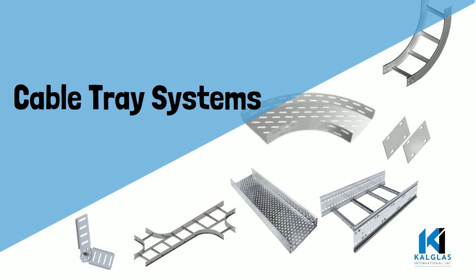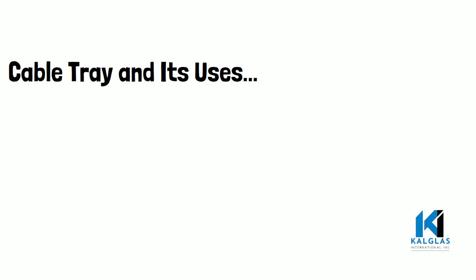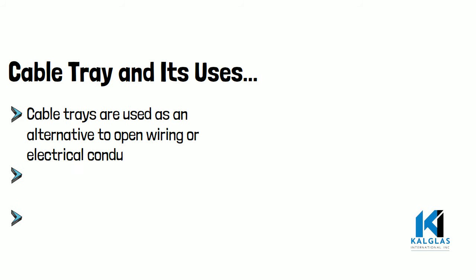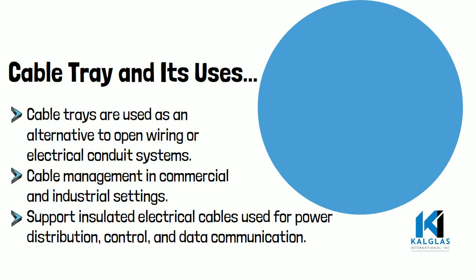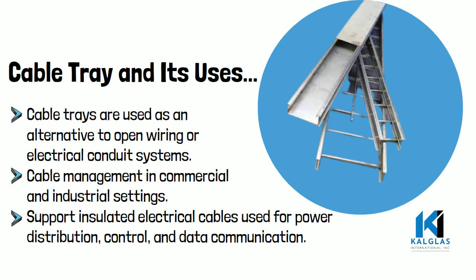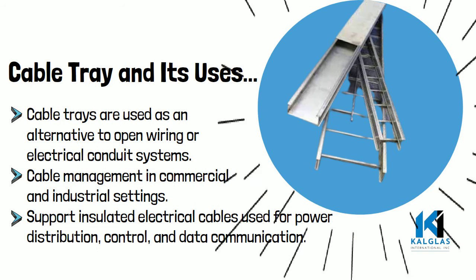Cable Tray Systems. A cable tray system is used to support insulated electrical cables used for power distribution, control, and data communication. Cable trays are used as an alternative to wireways or electrical conduit systems and are commonly used for cable management in commercial and industrial settings.